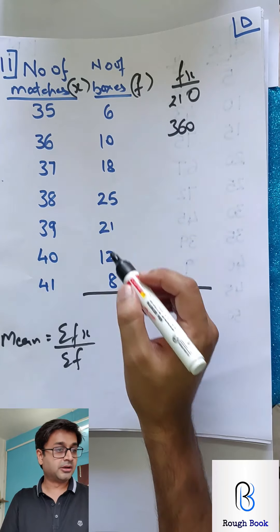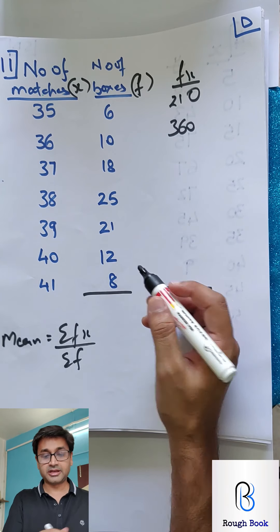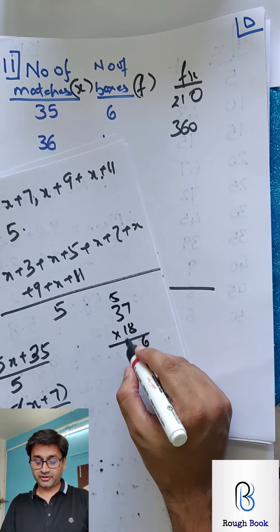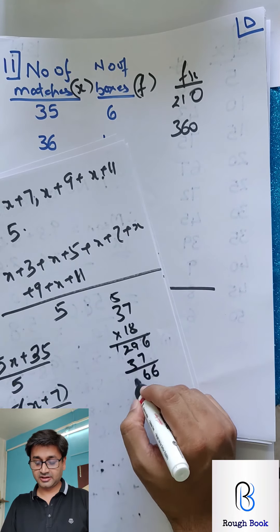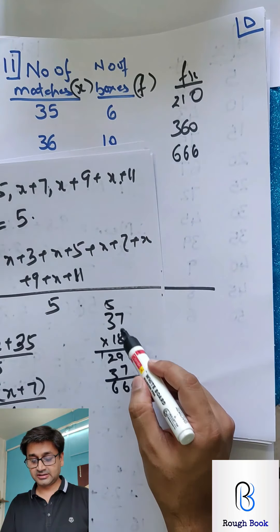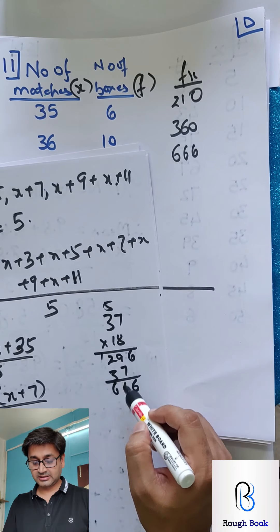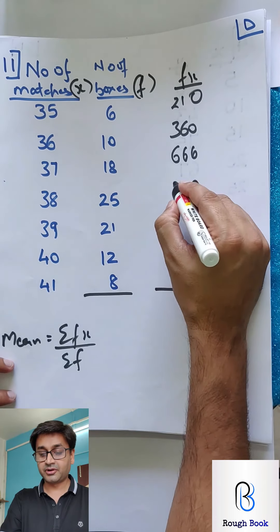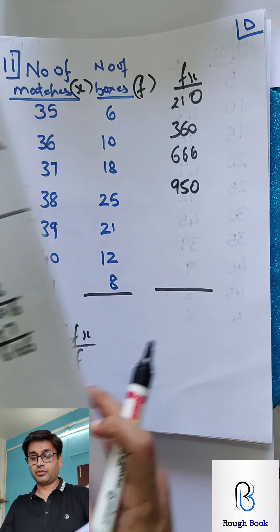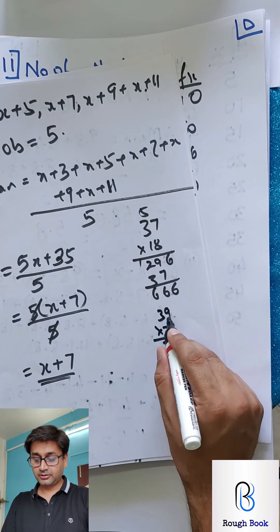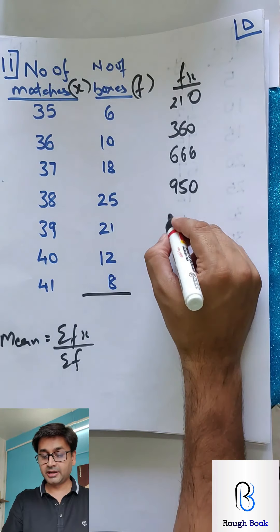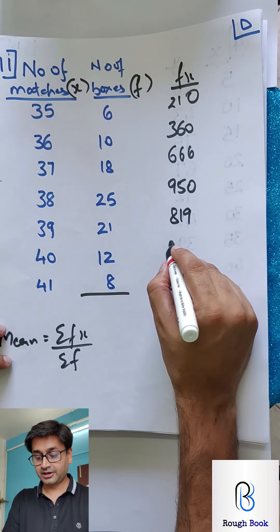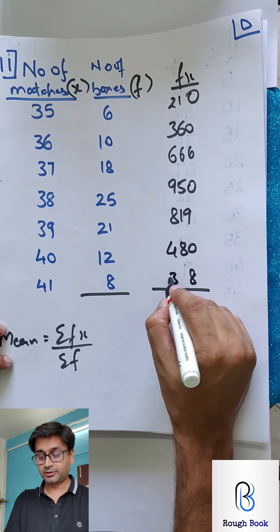Please tell me if I go wrong anywhere. 37 into 18 — let me calculate on a rough sheet. 37 into 18: 8 sixes are 56, carry 5; 24 plus 5 is 29, carry 2; 7 and 3, so I get 666. Then 25 into 8 is 200; 25 into 3 is 75, so 950. Then 39 into 21 — let me calculate: I get 819. Then 12 into 4 is 48, giving 480. And 8 into 1 is 8, 4 into 4 is 32.